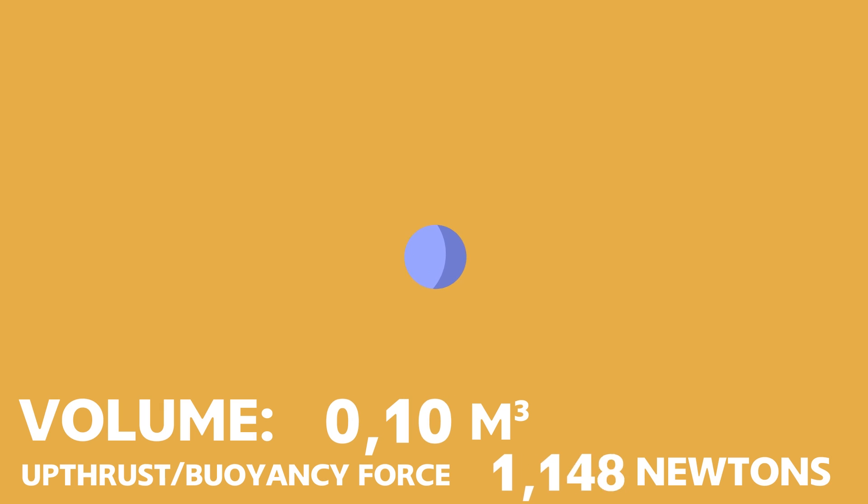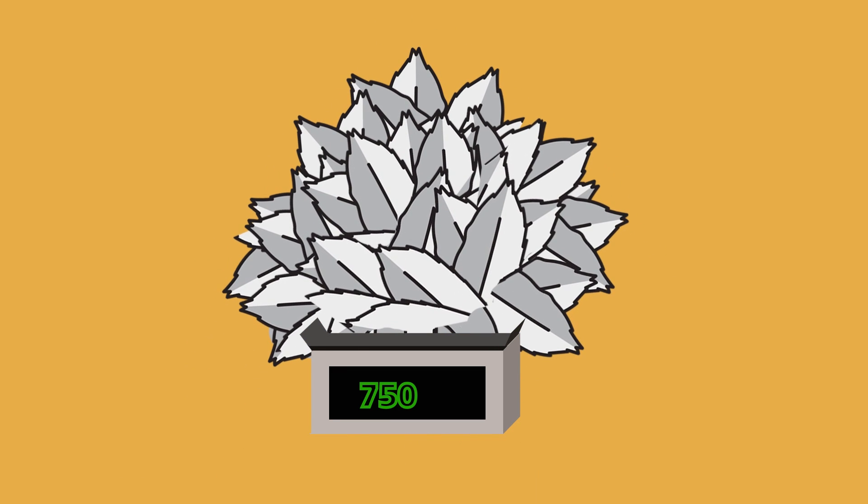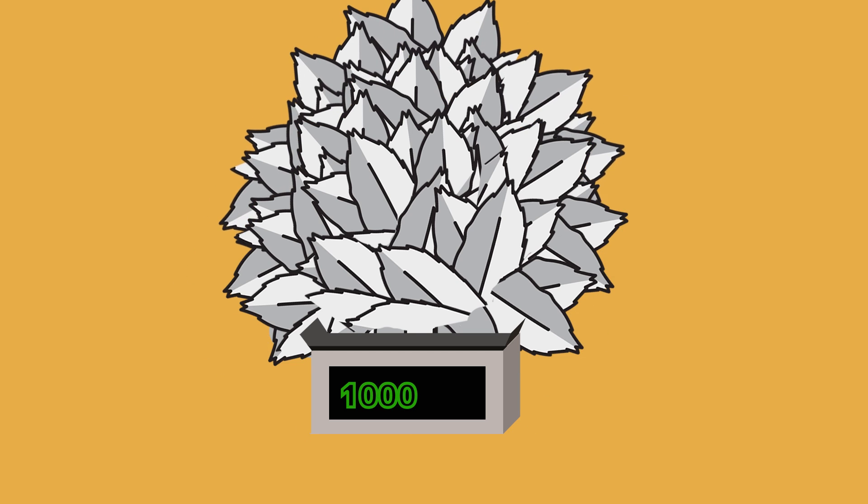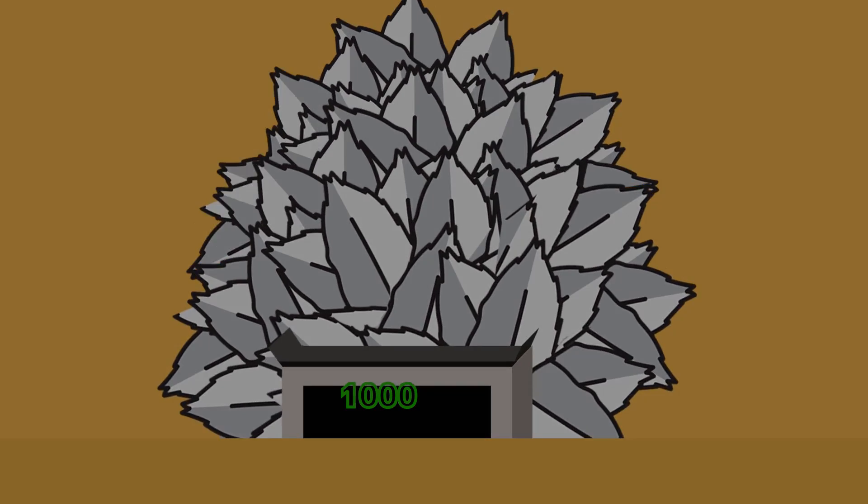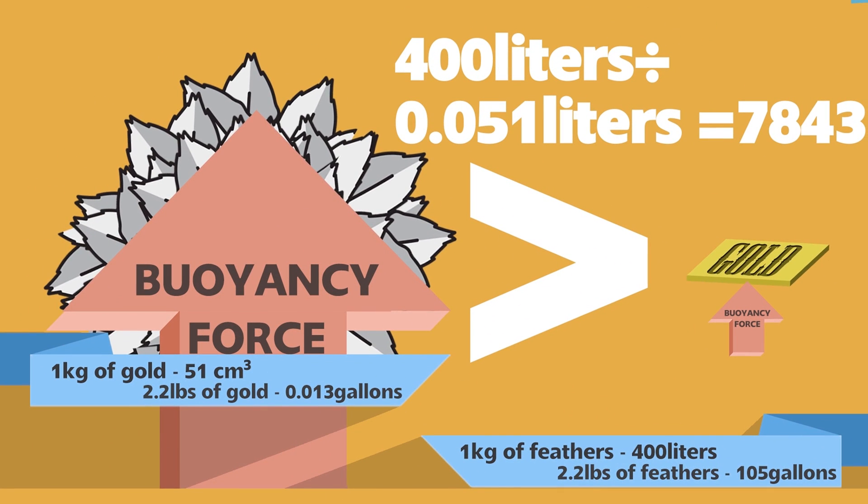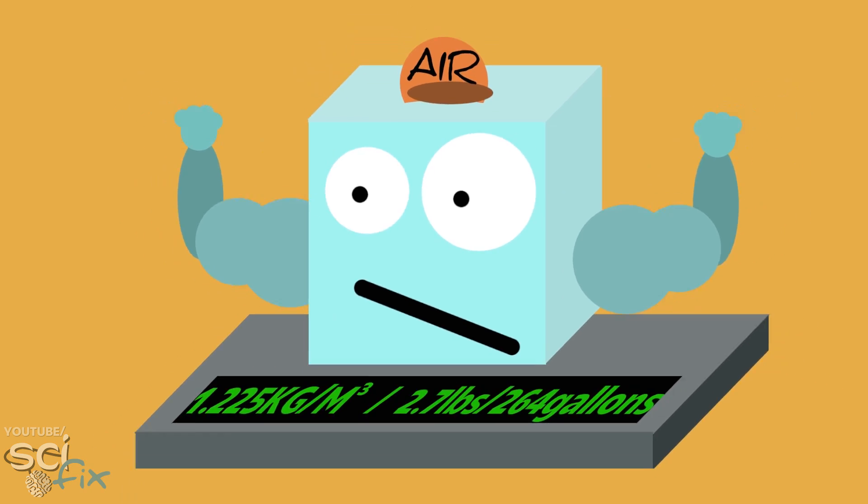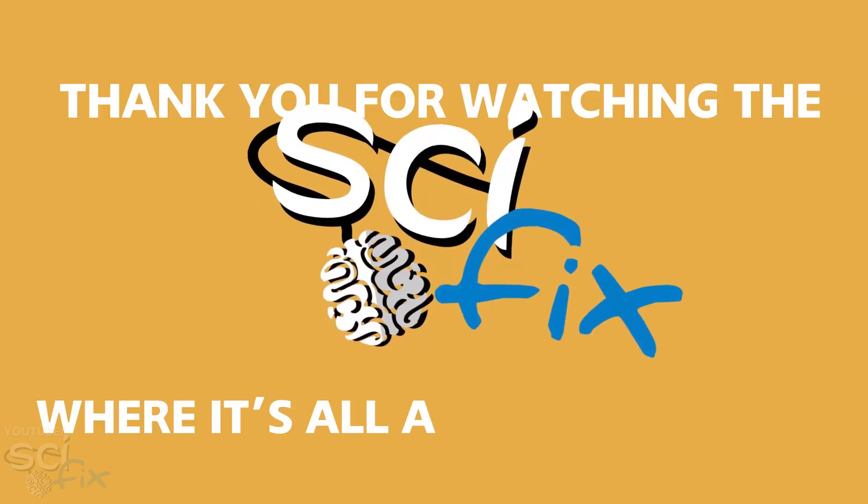In a nutshell, the bigger volume an object occupies, the greater upthrust force lifts that object up. And to make the scales show exactly 1 kilogram, we need half a kilogram more feathers to compensate the buoyancy force. That makes the feather's mass much bigger than the gold bar's, because gold bar is so dense and occupies nearly 8000 times less space. It's surprising what the seemingly light air can do. Thank you for watching the SciFix, where it's all about knowledge.